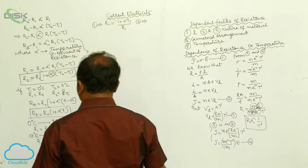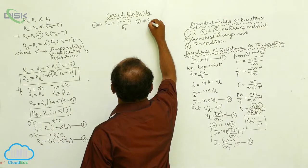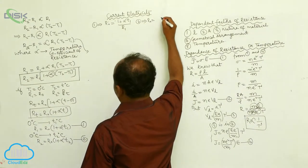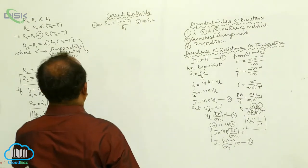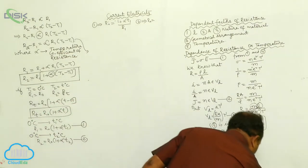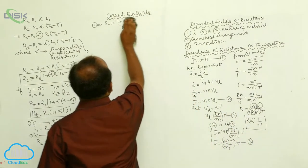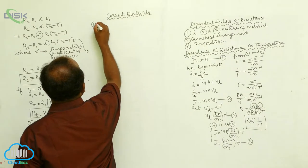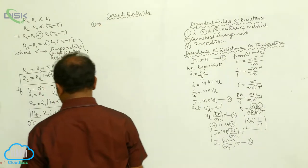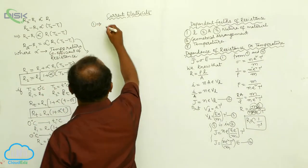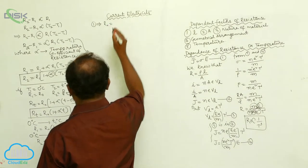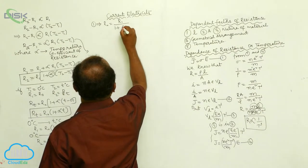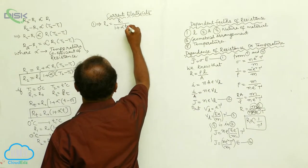From the second equation, R0 is equals to R2 by one place alpha into T2. Again from the first equation, R0 is equals to R1 by one place alpha into T1.